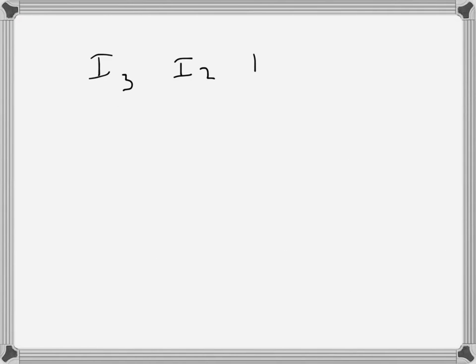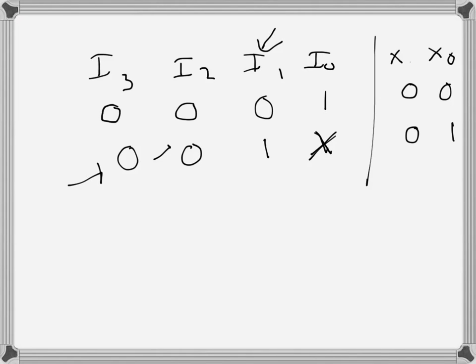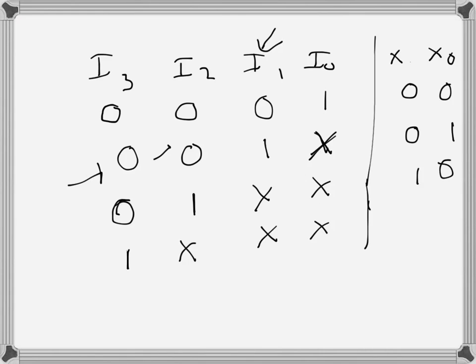Writing the truth table: inputs are i3, i2, i1, i0 and outputs are x1, x0. If only i0 is 1 (i3=i2=i1=0), output is 00. If i1 is active and i3, i2 are inactive, i0 is don't-care — output is 01. If i2 is active and i3 is inactive, i1 and i0 are don't-care — output is 10. If i3 is active, all remaining inputs are don't-care — output is 11.